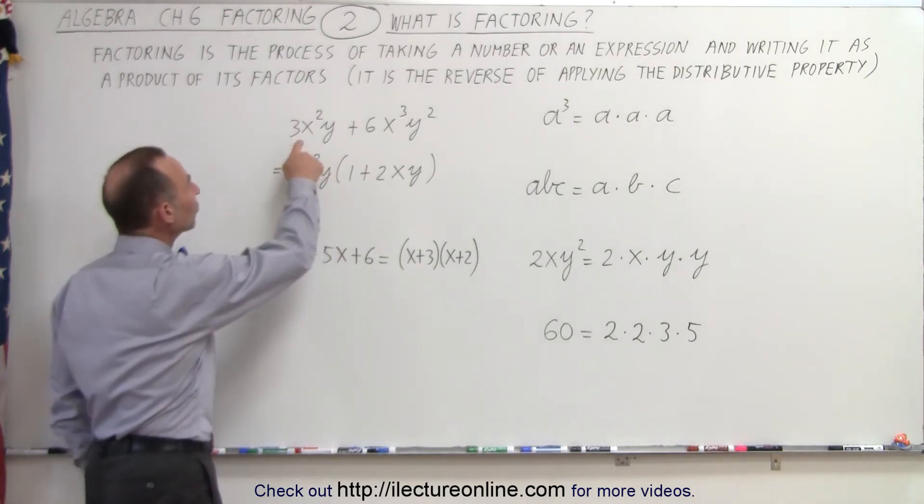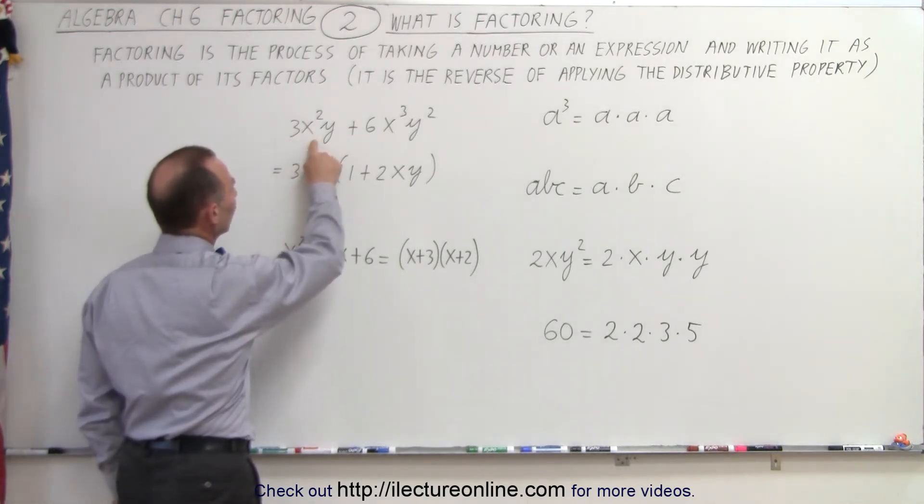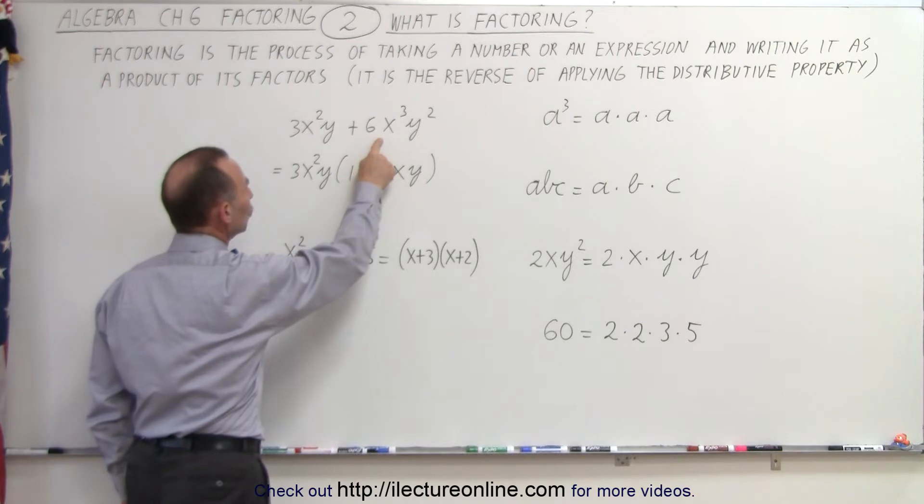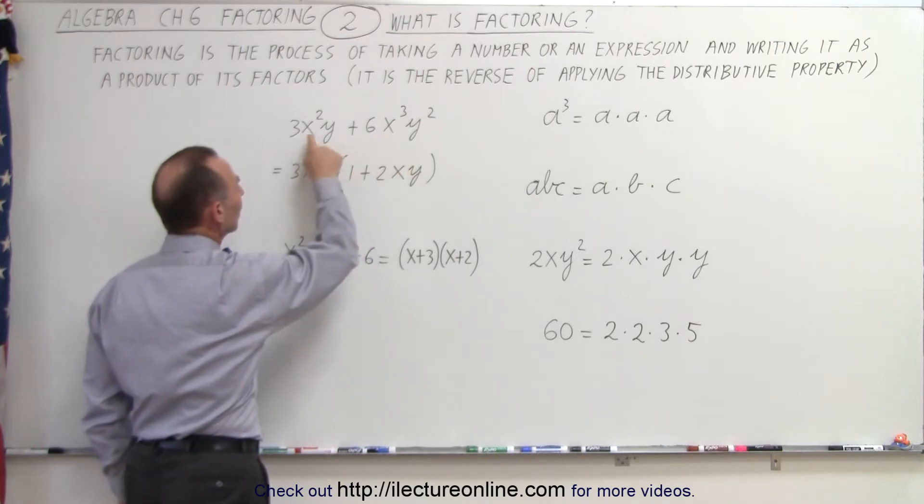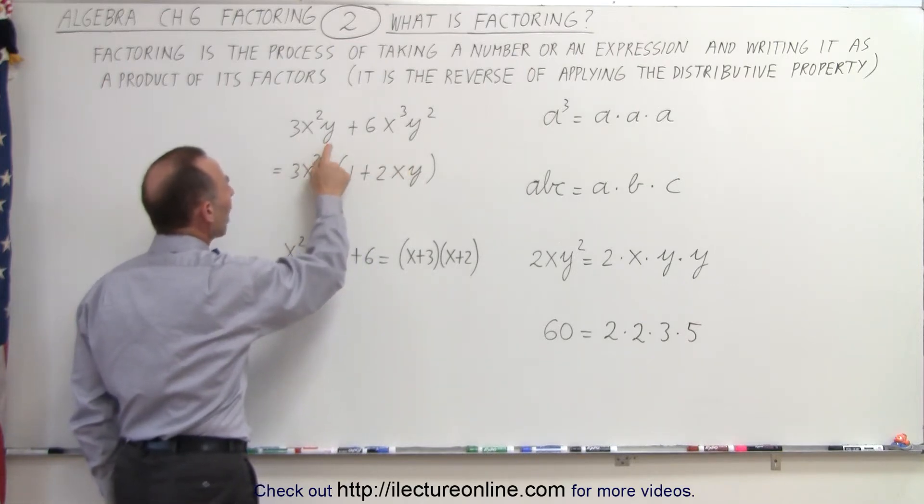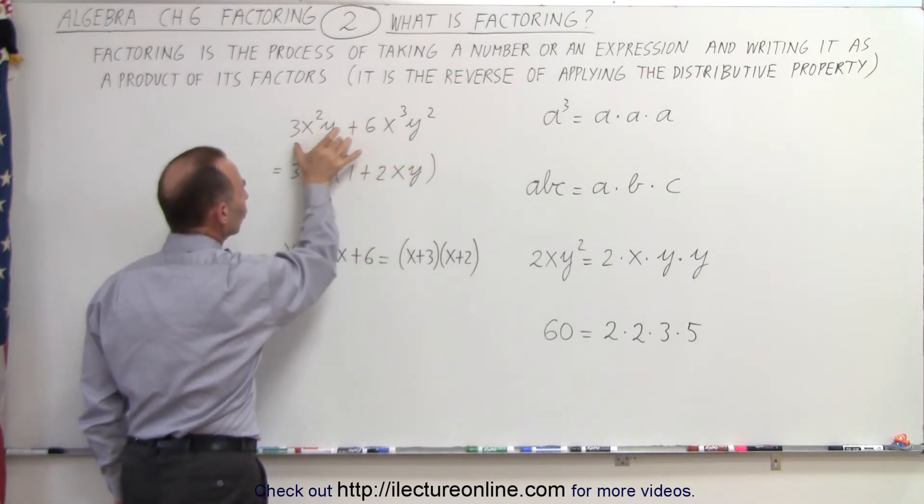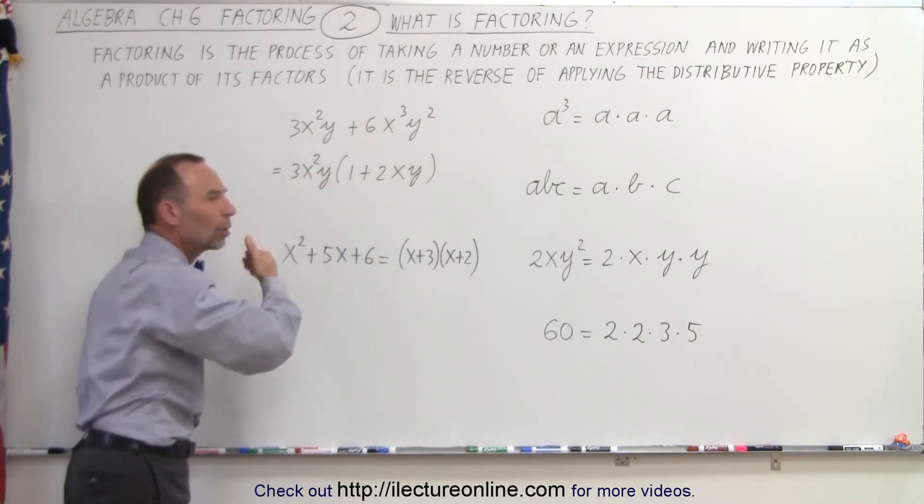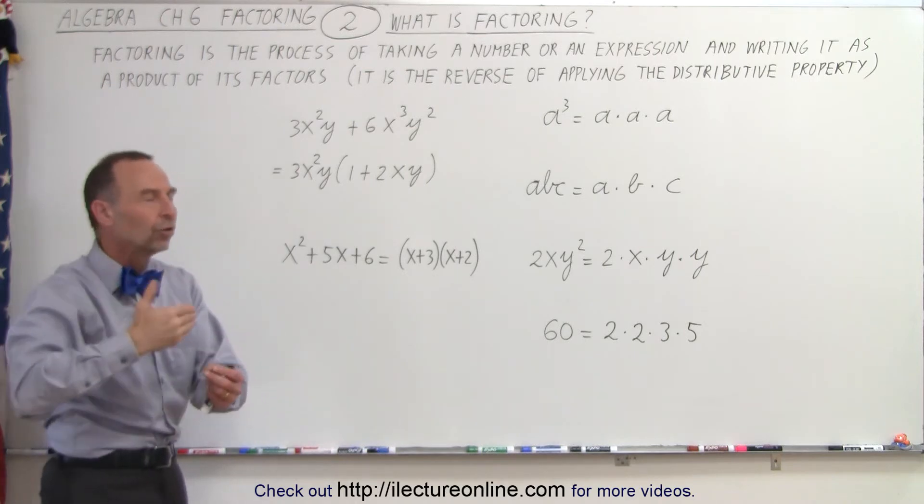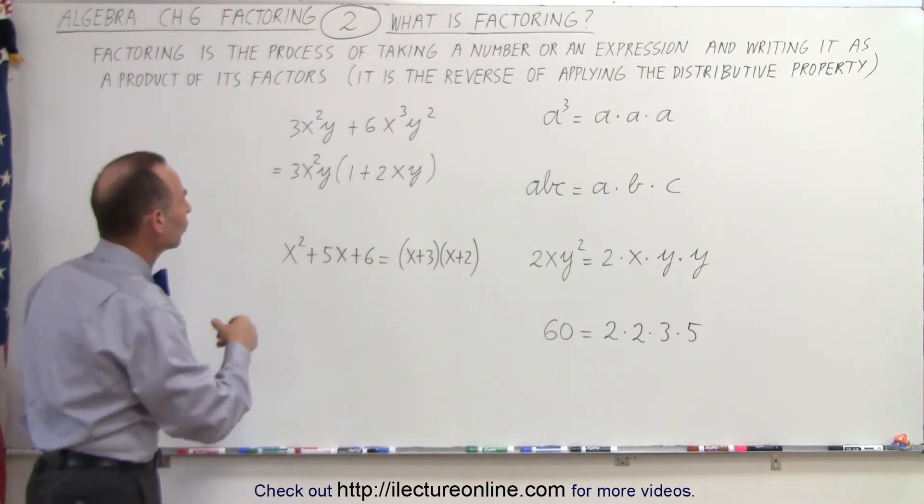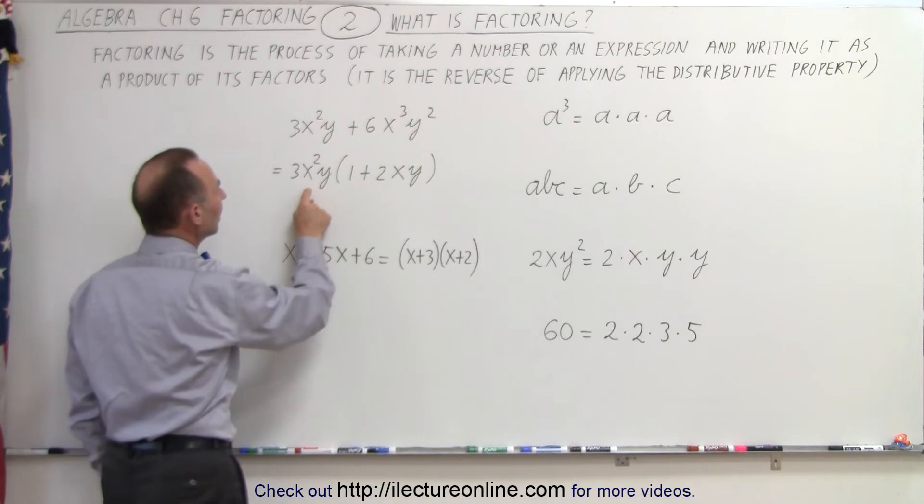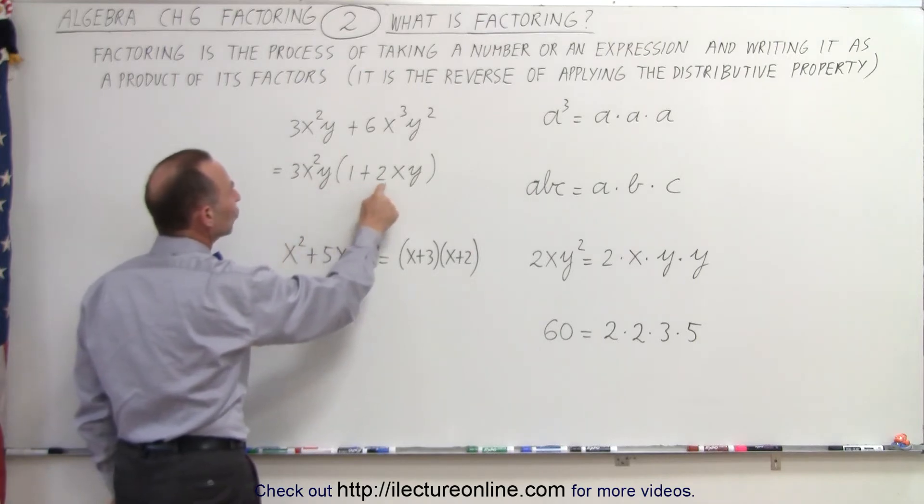In other words, in the case here, we have two terms, 3x squared y plus 6x cubed y squared. And we can see that 3x squared y is a common factor to both of these terms. So we can pull out, or factor out, that common factor. So we can write it as 3x squared y times the quantity 1 plus 2xy.